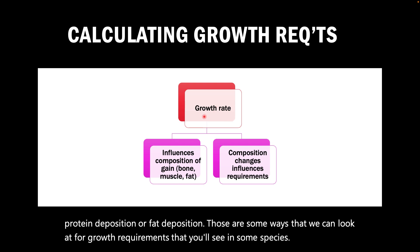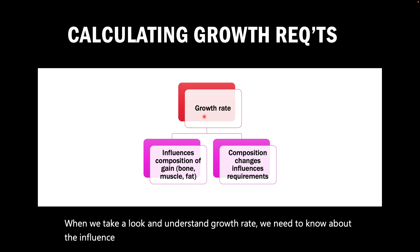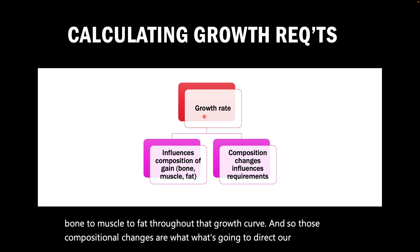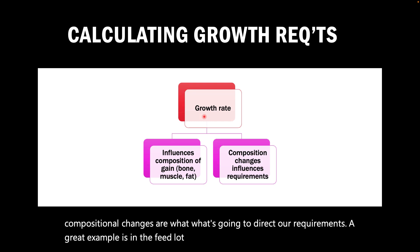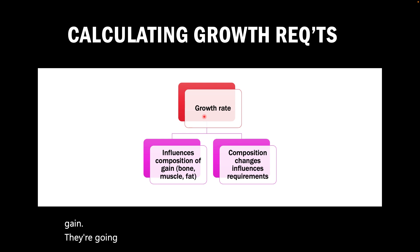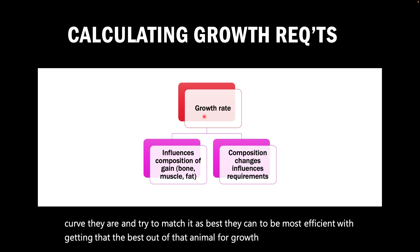When we take a look at growth rate, we need to know about the influence of the composition of gain — meaning there are different ratios of bone to muscle to fat throughout the growth curve. Those compositional changes are what's going to direct our requirements. A great example is in the feedlot industry, which uses step-up or stage rations to account for these differences in composition of gain, feeding animals appropriately for what stage in the growth curve they are to be most efficient without sacrificing health and well-being.